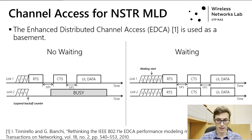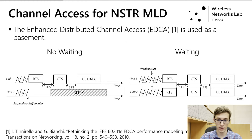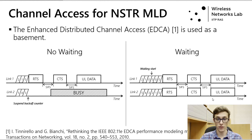In the second case, the station postpones its transmission and waits for the other link. During that wait, it keeps the back-off value on link 2 at 0. When link 2 also finishes its back-off, the NSTR MLD performs a synchronous transmission, which should boost the performance of the MLD. We call these options the 'no waiting' and 'waiting' options, respectively.